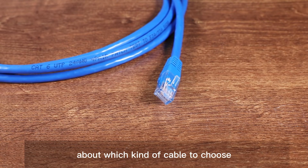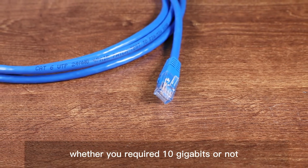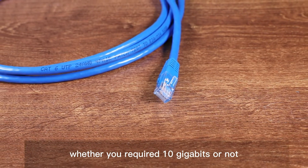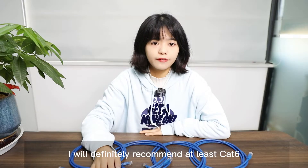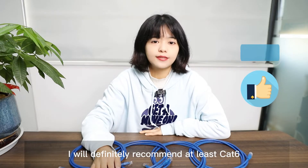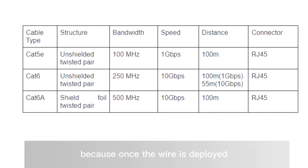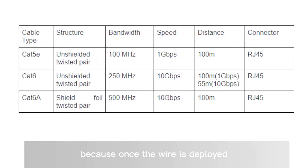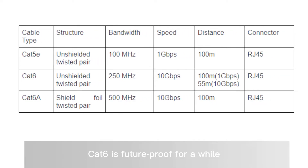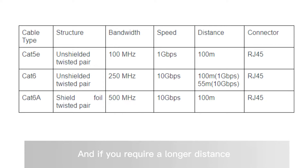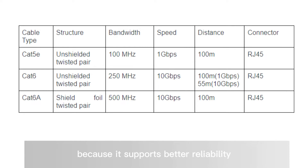Finally, about which cable to choose — whether you require 10 gigabits or not, I would definitely recommend at least CAT6A, because once a wire is deployed, it generally can't easily be replaced. CAT6A is future-proof, and if you require a longer distance, CAT6A would be ideal because it supports better reliability.